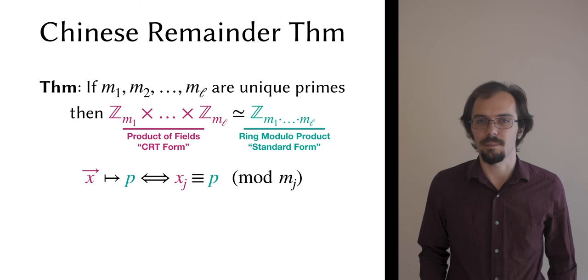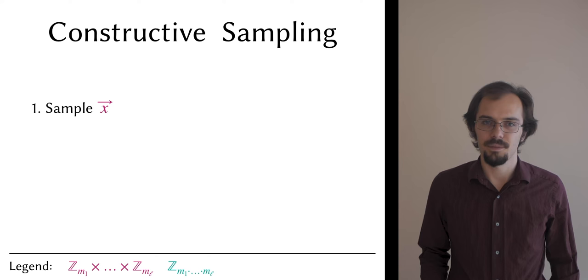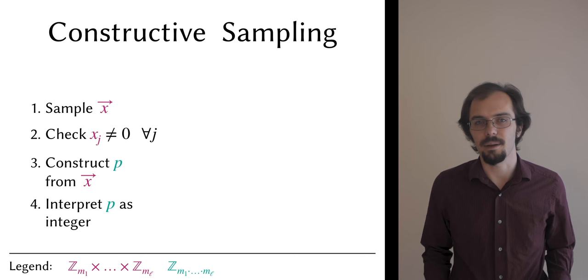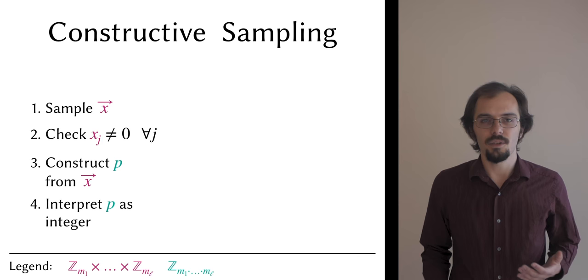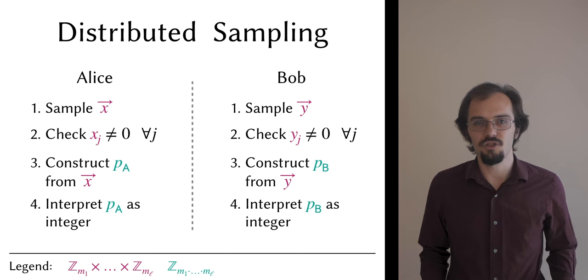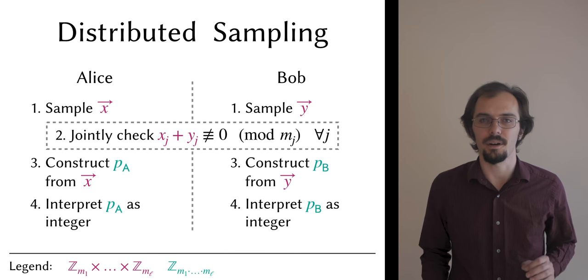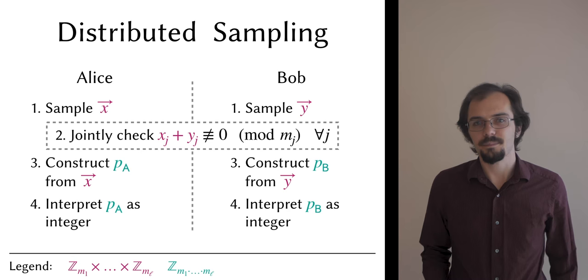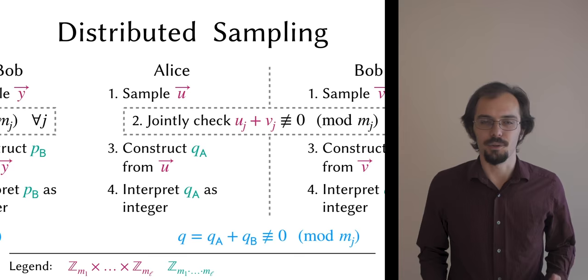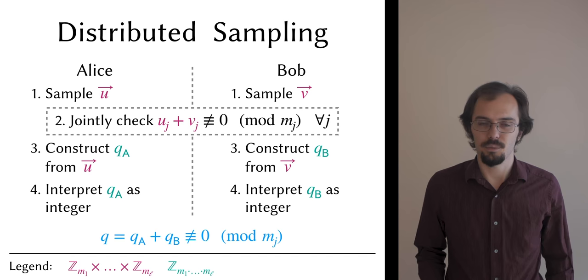If we had only one party, our sampling algorithm would be simple. Choose a CRT form value randomly, test to make sure all of its elements are non-zero, then find the corresponding standard form value and interpret it as an integer, which is our candidate prime p. It turns out that if we want to distribute this algorithm, we can do so simply by instructing the parties to run the algorithm individually and locally to generate integer shares of the candidate prime p, and instead of performing a local zero test, we instruct them to jointly test that the modular sums of their CRT form elements in each small prime field are non-zero. I'm going to gloss over how this works for the moment and come back to it later. We show that if they do this, the integer sum of their shares of p will be indivisible by all of the primes in the primorial vector. And of course they can repeat the process to sample q. The integer shares here are important, by the way. We need them for compatibility with the Boneh-Franklin test, which we're going to run later.